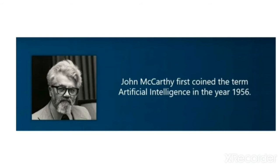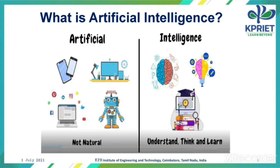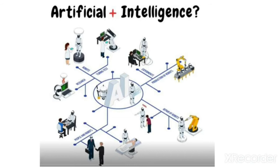The term artificial intelligence was first coined by John McCarthy in the year 1956. Before we answer what AI is, let us look at the terms individually. The term 'artificial' refers to anything that is made by humans — things that are not natural. The term 'intelligence' is the ability to understand, think and learn.